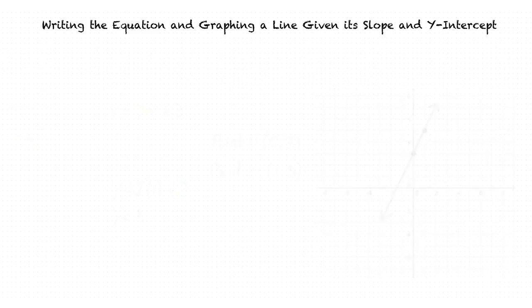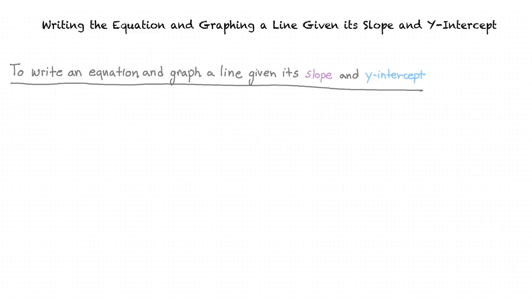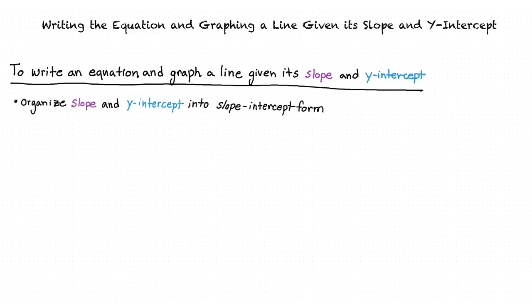I think I understand this now, but just to be sure, let me go over what I've learned. To write an equation and graph a line given its slope and y-intercept, it's important to first organize the slope and y-intercept into slope-intercept form. The slope is always multiplied by x, and the y-intercept will always be added to the slope and x multiplied together.